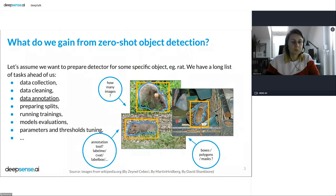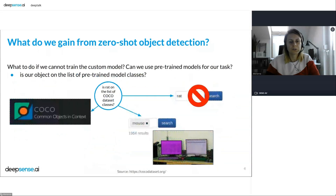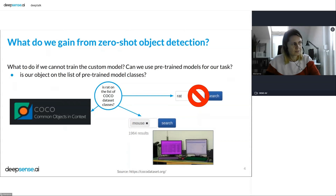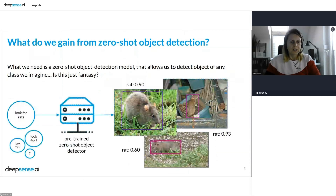Annotation is a lot of work — we have to decide what tool to use, whether we want bounding boxes or polygons. Polygons mean even more work. Then we have to prepare splits, run training which takes a long time, then evaluate and tune our models. So what if we don't want to do all of that? We can try to use a pre-trained detector, but the most popular ones are trained on the COCO dataset, and there are no rats in COCO.